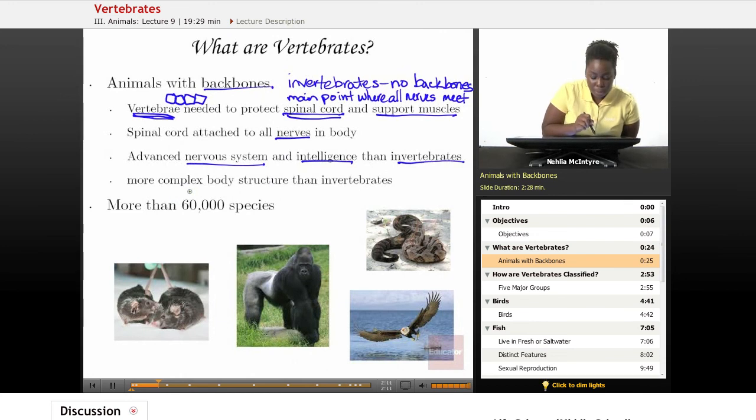Because of the vertebrae allowing more structure and support for the body, the vertebrates tend to have more complex body structure than invertebrates. So there's more than 60,000 different types of species of vertebrates that have been identified and named.